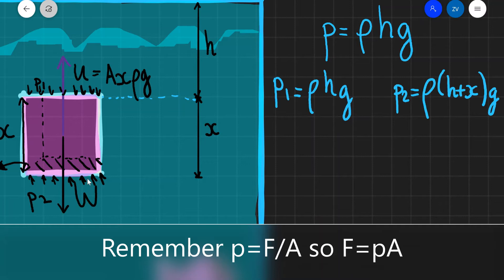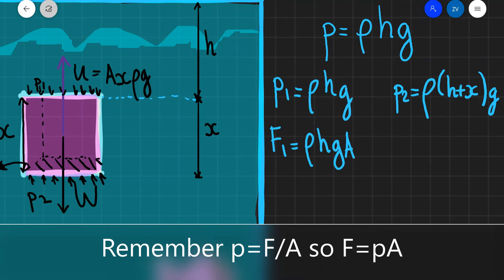Because pressure is equal to force over area, the force will be equal to the pressure multiplied by the area. So the force at the top, let's call that F1, will be equal to rho times H times G times the cross-sectional area A. And the force at the bottom, let's call that F2, will be equal to rho times (H plus X), which is the depth, times G times A.